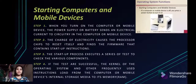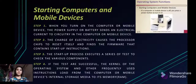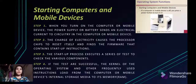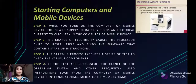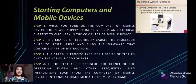The first operating system function is starting computers and mobile devices. If a computer or mobile device is off, you press the power button to turn it on. If it is on, you may need to restart it for a variety of reasons. When you start or restart a computer or mobile device, a series of messages may appear on the screen. The startup process is similar for large and small computers and mobile devices. Step 1: When you turn on the computer, the power supply or battery sends an electrical current to the circuitry. Step 2: The electricity causes the processor chip to reset itself and find the firmware containing startup instructions.